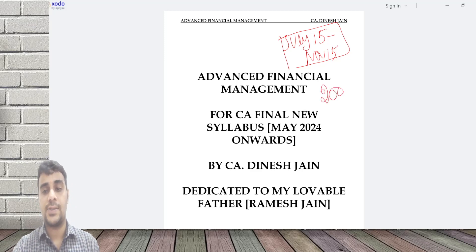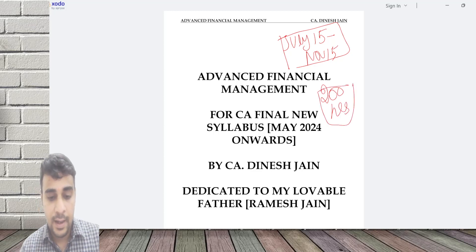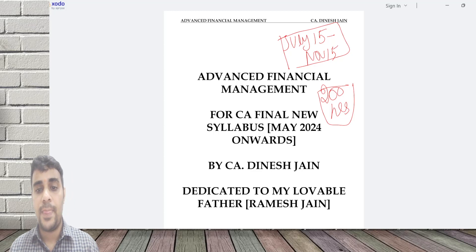We're looking at around 200 hours of classes, approximately 70 classes. Earlier we used to do 160 hours for SFM. Now it will go to 200. One major reason is the introduction of a chapter called Advanced Capital Budgeting, a new addition by ICAI.